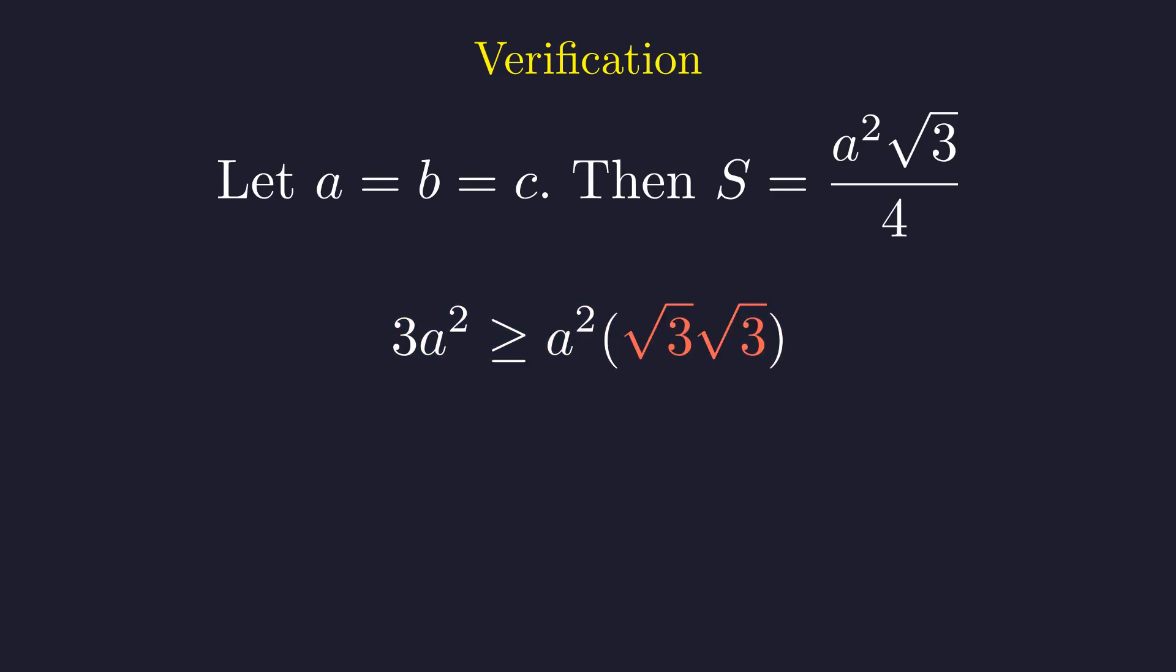Now, we simplify this product of square roots, which should give us something familiar. Square root of 3 times square root of 3 is just 3, giving us 3A squared equals 3A squared. Perfect equality. Our theory checks out beautifully.